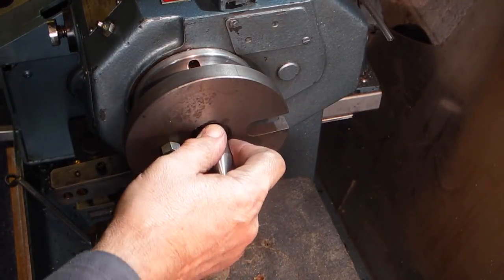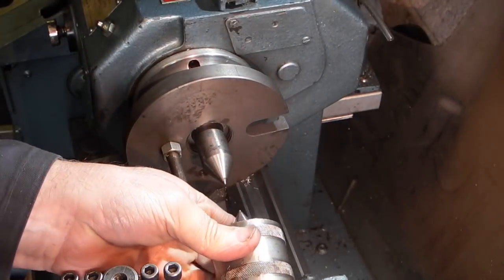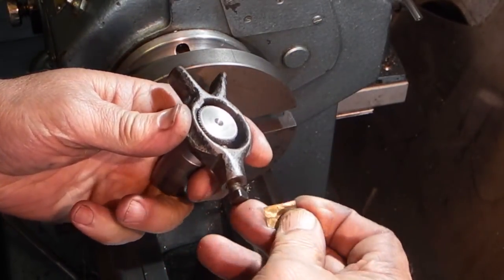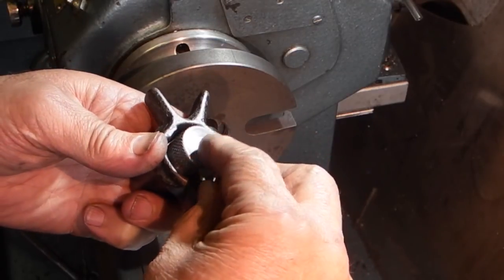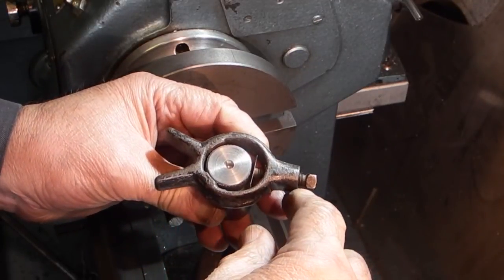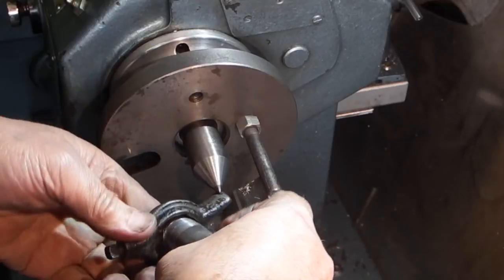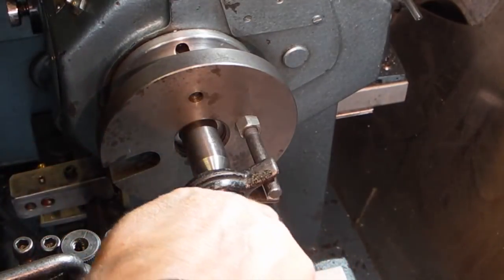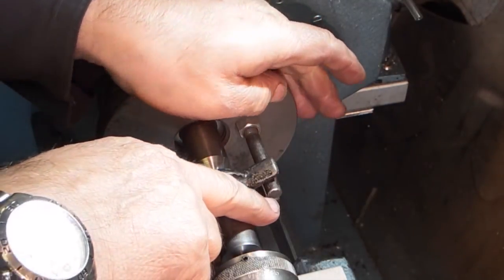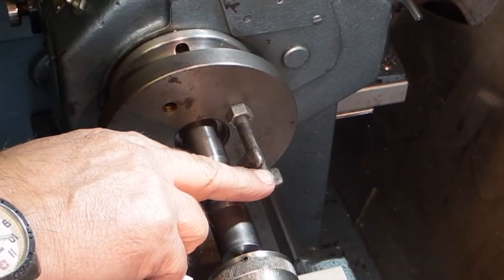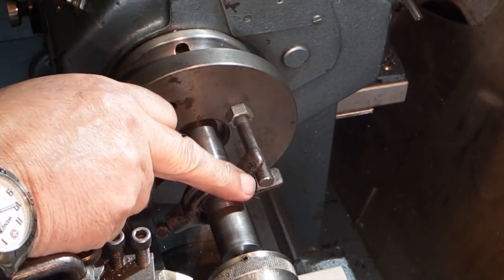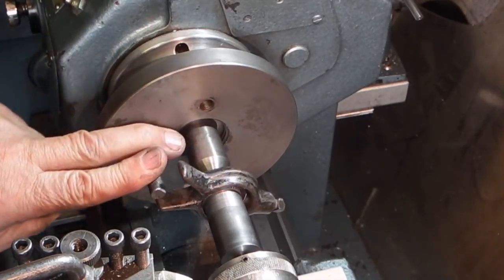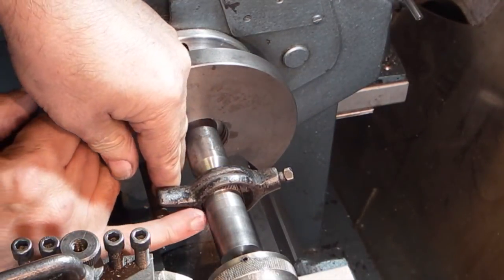I'll center it. This is a large revolving center, number two morse taper. This is the driving dog or carrier that goes onto the end. Because I don't want to damage the knurl, I'm just putting a small piece of sheet steel between that and the bolt. I'll tighten this up. Now this pin is sticking out too far, so I want to undo the nut and wind the pin in so it's clear of the outside. That will now go between centers and it just catches the edge and turns it round, so I know there's nothing protruding outside.